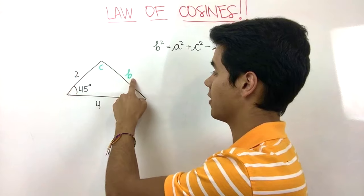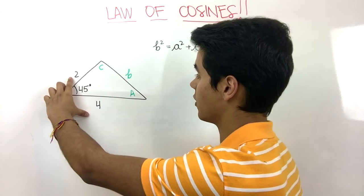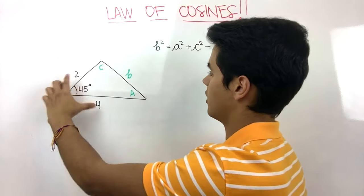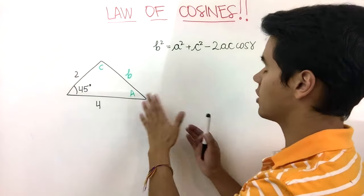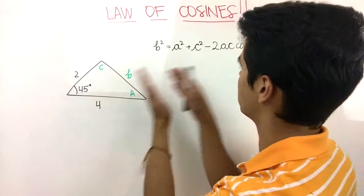So this is our formula: the square of this side is equal to the sum of the squares of these two sides minus twice their product times the cosine of 45 degrees. We just have to substitute in all these numbers.